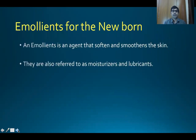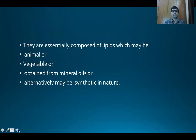So, what is an emollient? An emollient is an agent that softens and smoothens the skin. They are also referred to as moisturizers and lubricants. They are essentially composed of lipids, which may be animal or vegetable or obtained from mineral oils, or alternatively may be synthetic in nature.